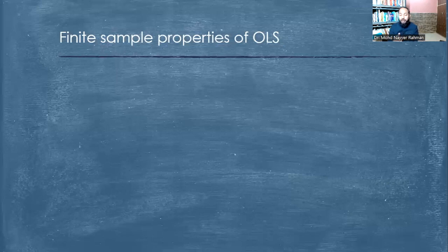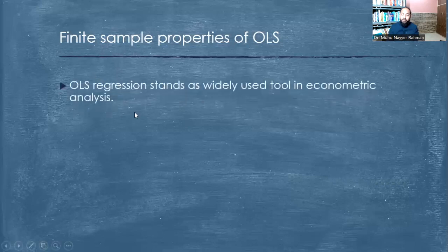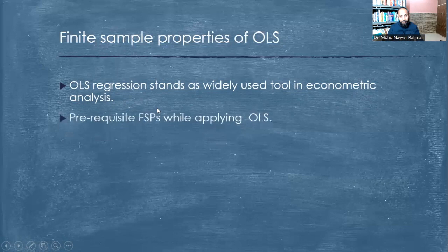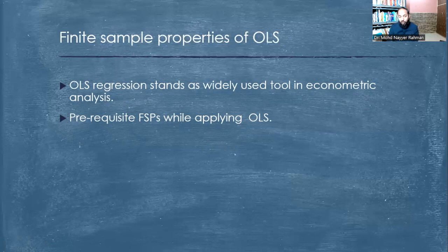Ordinary Least Square (OLS), that is regression analysis, is the most widely used tool in econometric analysis. There are some prerequisites — we call them assumptions — and the technical term is the finite sample properties (FSP) of Ordinary Least Square. In general parlance they are called assumptions of regression, but in econometrics the technical term is finite sample properties of OLS.